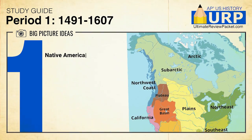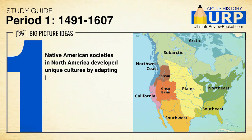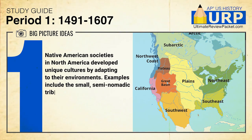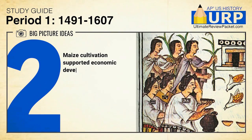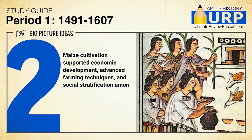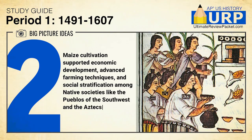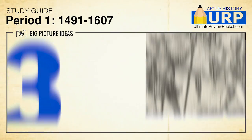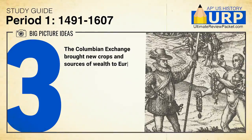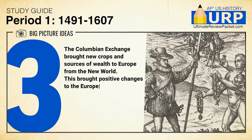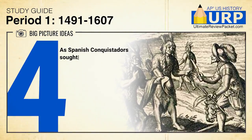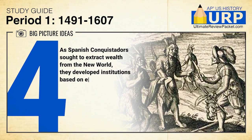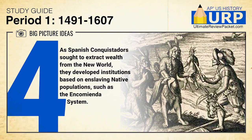There are four big picture ideas for Period 1. First, Native American societies in North America developed unique cultures by adapting to their environments, like the semi-nomadic tribes of the Great Plains and the Cahokia Mound Builders. Second, maize cultivation supported economic development, advanced farming techniques, and social stratification among Native societies like the Pueblos and the Aztecs. Next, the Columbian Exchange brought new crops and sources of wealth to Europe from the New World, while old-world diseases like smallpox devastated Native communities. And lastly, as Spanish conquistadors sought to extract wealth from the New World, they developed institutions based on enslaving Native populations, such as the encomienda system.